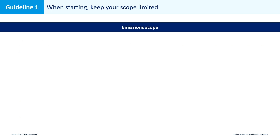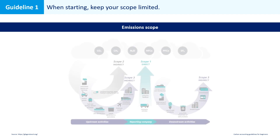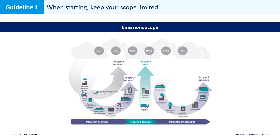Organizational scope was the first dimension. The second dimension is the emissions scope. You're probably familiar with this picture showing the three different scopes of carbon emissions according to the GHG protocol. You should always report scope 1 and scope 2 emissions — this is mandatory. It is not mandatory, however, to report scope 3 emissions, so it is up to you to decide which of the 15 scope 3 categories you should report.